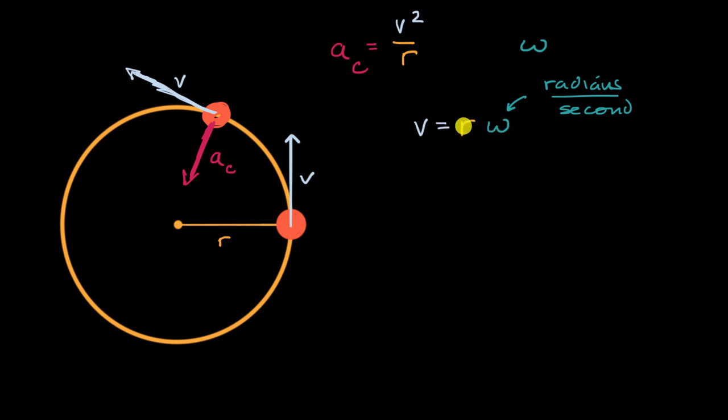From this formula, it's easy to make a substitution back into our original one to have an expression for centripetal acceleration, the magnitude of centripetal acceleration, in terms of radius and the magnitude of angular velocity. I encourage you, pause this video and see if you can derive that on your own. All right, let's do this together.